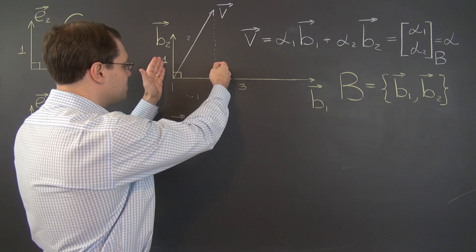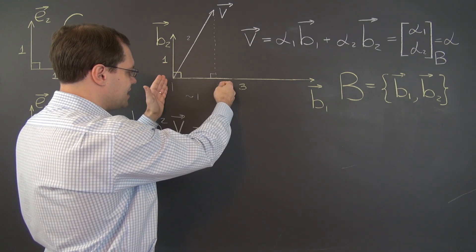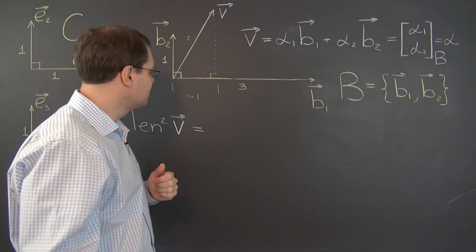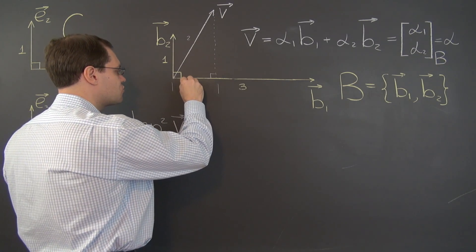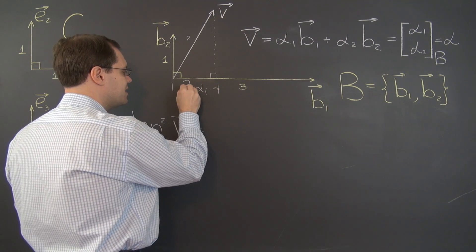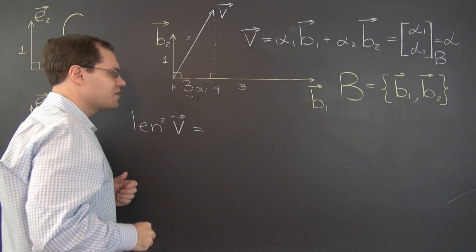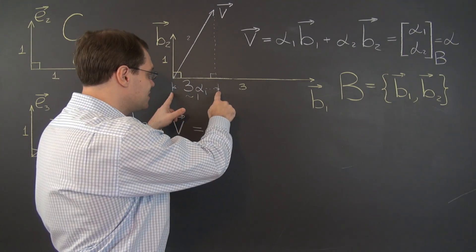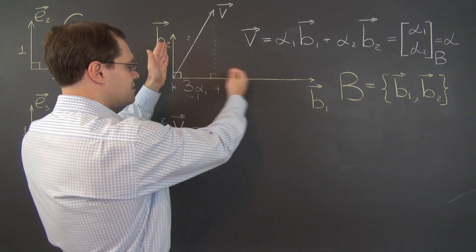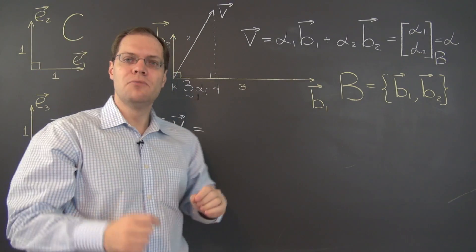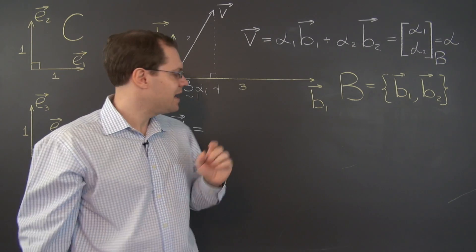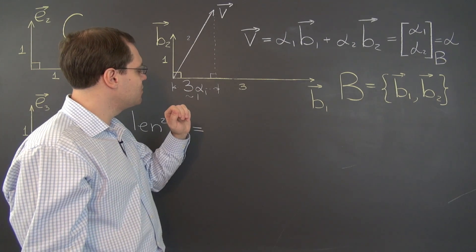If we want to obtain the length of this segment in terms of alpha 1 so we can use the Pythagorean theorem next, we have to realize that it equals 3 times alpha 1. That's what the length of this segment is. It used to be alpha 1. Now the length of this segment hasn't changed because vector v hasn't changed and these directions haven't changed, but what the length of that segment is in terms of alpha 1 has changed.